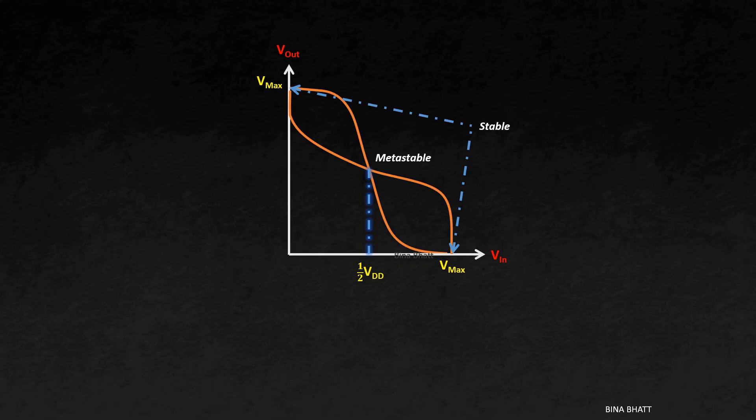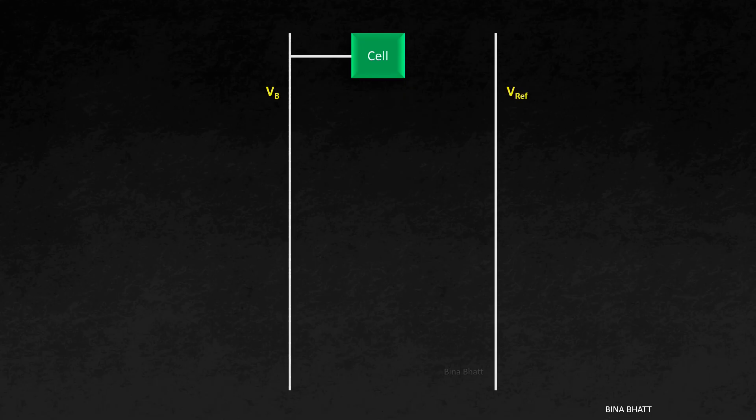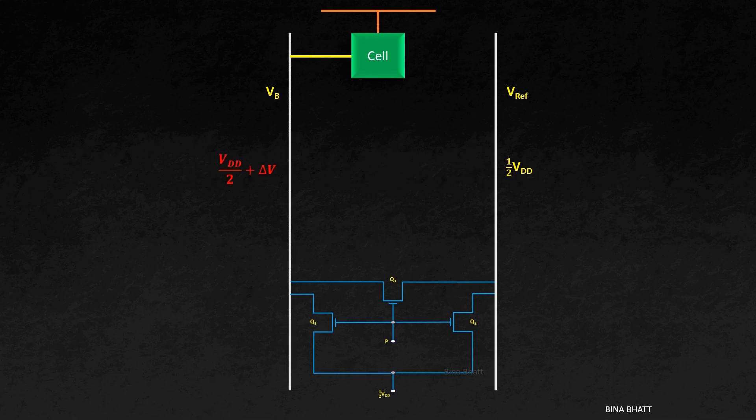Now let's try to integrate this new information with our existing knowledge about the read operation. And let's consider the read operation again. Assume that this time the cell contains a bit value of 1. Now we have a bit line and a reference line, both of which are precharged by precharge and equalizer circuit to VDD by 2. The word line is asserted, which connects the cell capacitor to the bit line. The charge sharing process begins between the cell capacitor and the bit line capacitor. And at the end of this process, we get a slight increase in bit line voltage, also known as delta V.